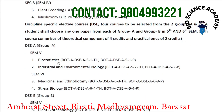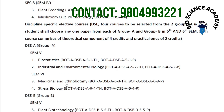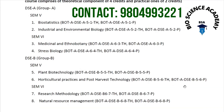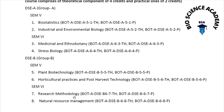In semester 5, along with the CC papers, students have to select any one DSE A paper. The first option is Biostatistics and the second option is Industrial and Environmental Biology. In semester 6, the DSE A options are Medicinal and Ethnobotany and Stress Biology. The DSE B paper for semester 5 is Plant Biotechnology or Horticultural Practices and Post-Harvest Technology, and for semester 6 it is Research Methodology and Natural Resource Management.